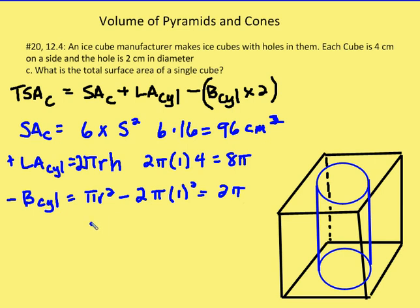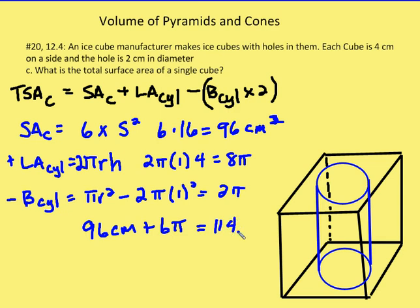So the answer is 96 plus 8 pi minus 2 pi, which is 96 plus 6 pi. That gives a final answer of approximately 114.8 square centimeters.